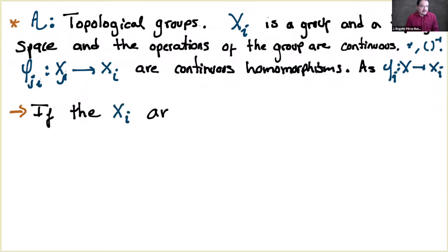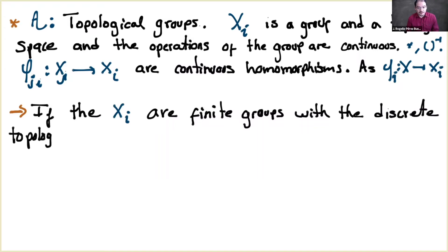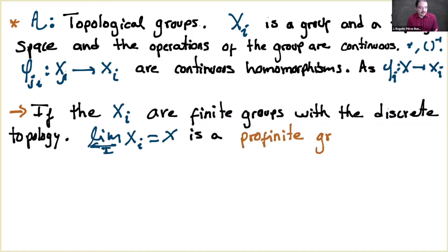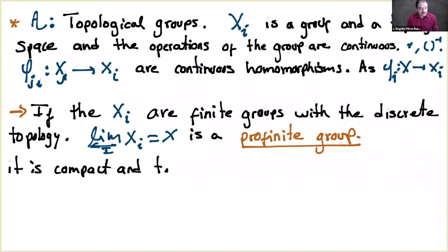If every X_i is a finite group with the discrete topology, then we have more than a profinite set — this is called a profinite group. This is a very important kind of example that appears a lot in this series. Once again, these profinite groups are groups which are compact and totally disconnected, just by the construction.